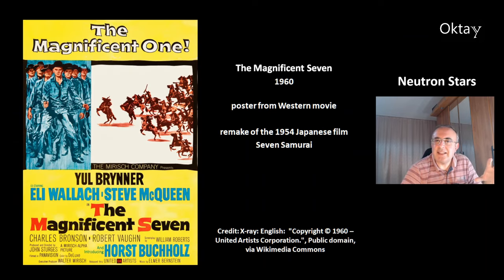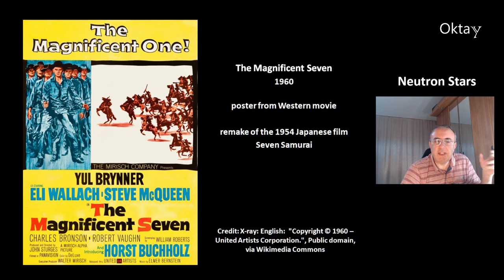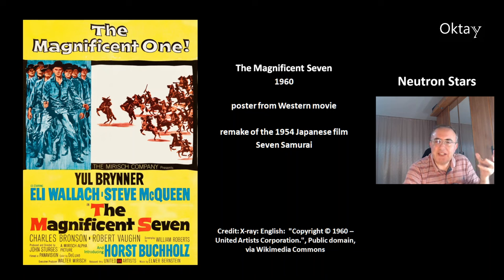This is a nice poster of the movie The Magnificent Seven, the western movie from 1960. It stars Yul Brynner and Steve McQueen; Eli Wallach plays the villain Calvera. This movie is the remake of the Japanese film Seven Samurai from 1954. That was today's video about neutron stars. You can check out the links to the current newest scientific articles. Thank you for watching — have a nice day, bye-bye.